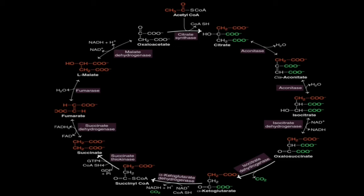Succinyl-CoA is converted into succinate by succinate thiokinase. During this conversion, one high-energy compound — GTP — is produced directly from the substrate. This is called substrate-level phosphorylation, and it is the only substrate-level phosphorylation reaction in the TCA cycle. Coenzyme A is also released in this step.